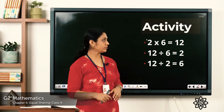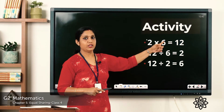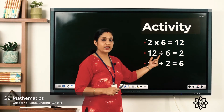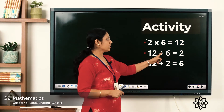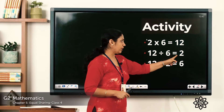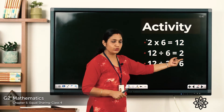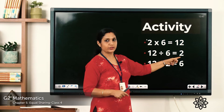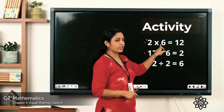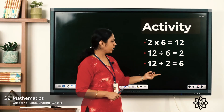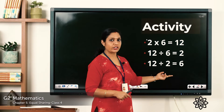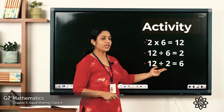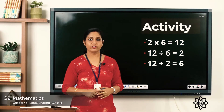Let's check the answers. 2 sixes are 12. If we divide 12 by 6, say the table of 6: 6 ones are 6, 6 twos are 12 — so 12 divided by 6 is equal to 2. Next, 12 divided by 2 is equal to 6. Check with the table of 2: 2 ones are 2, 2 twos are 4, 2 threes are 6, 2 fours are 8, 2 fives are 10, 2 sixes are 12 — the answer is correct. Hope you all have done it correctly.